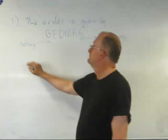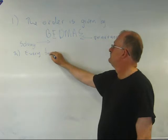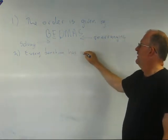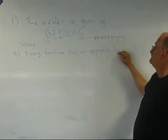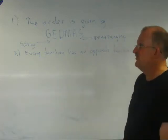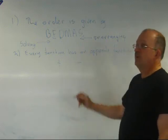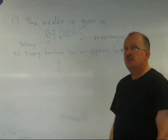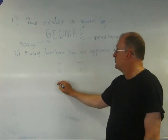Rule number two. Every function has an opposite function. So what I mean by this is that for addition, the opposite function to addition is subtraction. For multiplication, the opposite function to multiplication is division.